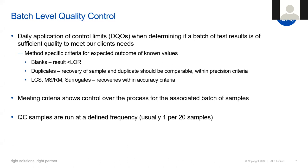Meeting the criteria shows everything is acceptable; however, what happens if there are exceedances? Common causes of DQO exceedances include sample matrix effects or chemical interferences impacting recovery, non-homogeneity of samples impacting precision, or equipment failures impacting recovery and turnaround times. If there is an exceedance, an investigation must be done: we investigate the situation, fix the problem, and re-analyze the samples if possible. When re-analysis is not possible, the lab can report the results, but they must be qualified with comments describing the potential impact. QC evaluation is the main defense against inappropriate data being reported.